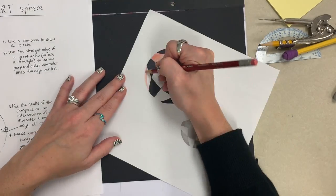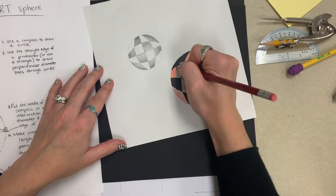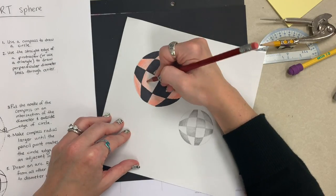By pretending there's a light source at the top and treating the center of my sphere as a highlight, I can make it look very round when I shade.